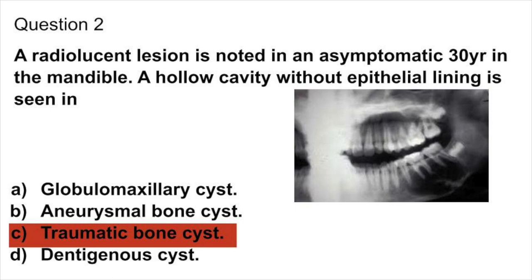Traumatic bone cyst is also known as hemorrhagic bone cyst. It is a pseudocyst because it has no epithelial lining. Aneurysmal bone cyst presents in young patients with blood welling up from the tissue, so the cavity is not hollow — option B is ruled out. Globulomaxillary cyst is usually found in the maxillary region, but this lesion is in the mandible. Therefore, the answer is traumatic bone cyst, a pseudocyst without an epithelial lining.